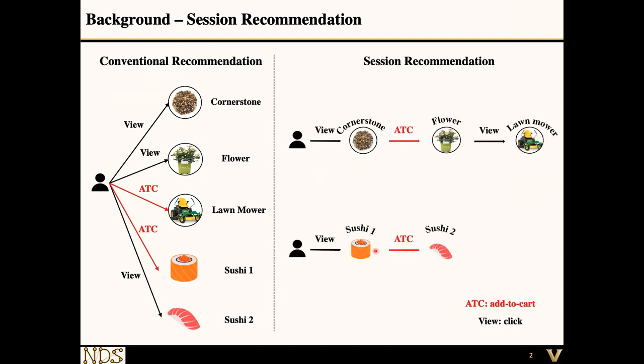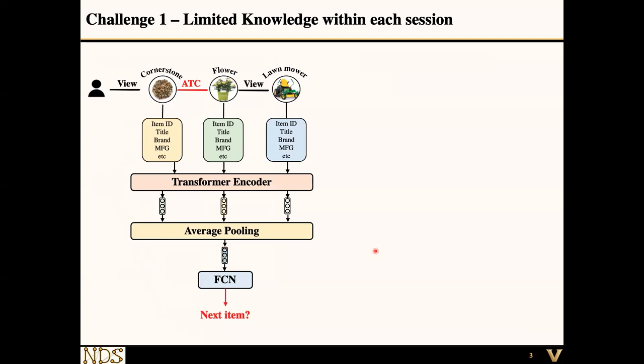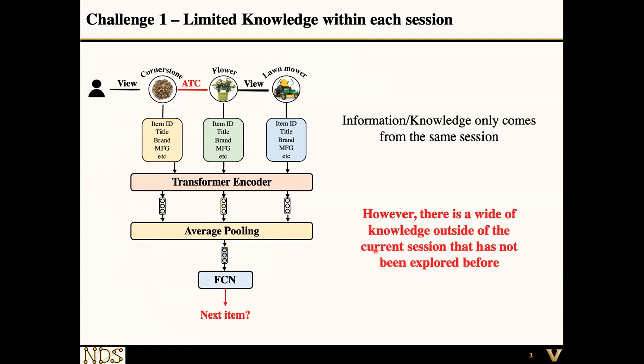This leads to session recommendation, where we split these five interacted items into two sequences, so that if we only make recommendations for each sequence, we avoid fusing two very different intentions. However, the previous way to do sequence recommendation only looks at the information within each sequence. Taking the transformer model as an established example, it takes the metadata of products in the sequence, does self-attention, and makes the next item prediction. The problem is the current framework only uses information within the same session, while there is a wealth of knowledge outside the current session that has not been explored.